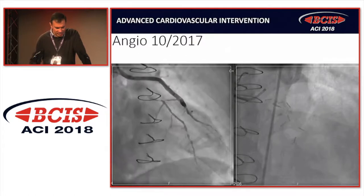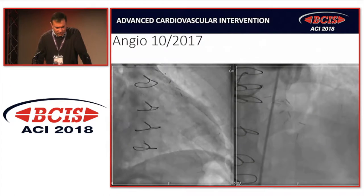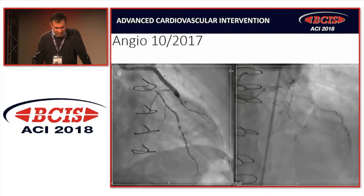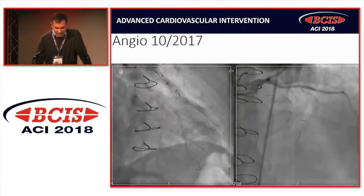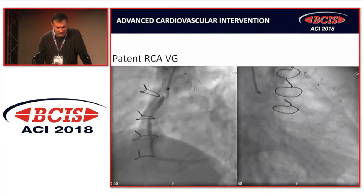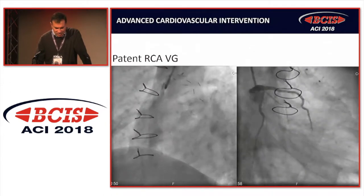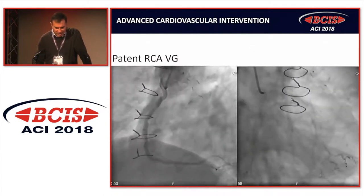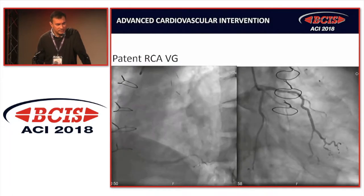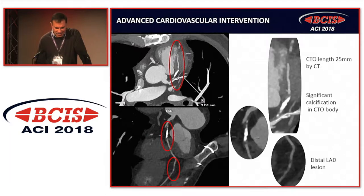His angiogram shows the vein graft to the diagonal. The LAD is occluded and the vein graft is backfilling to the LAD. There's significant disease in the mid- to distal LAD as well. The vein graft to the right is open. The LAD is flush occluded at the origin of a diagonal. He's had a CT, and the CTO length is 25 millimetres by CT, and there's a significant amount of calcification.